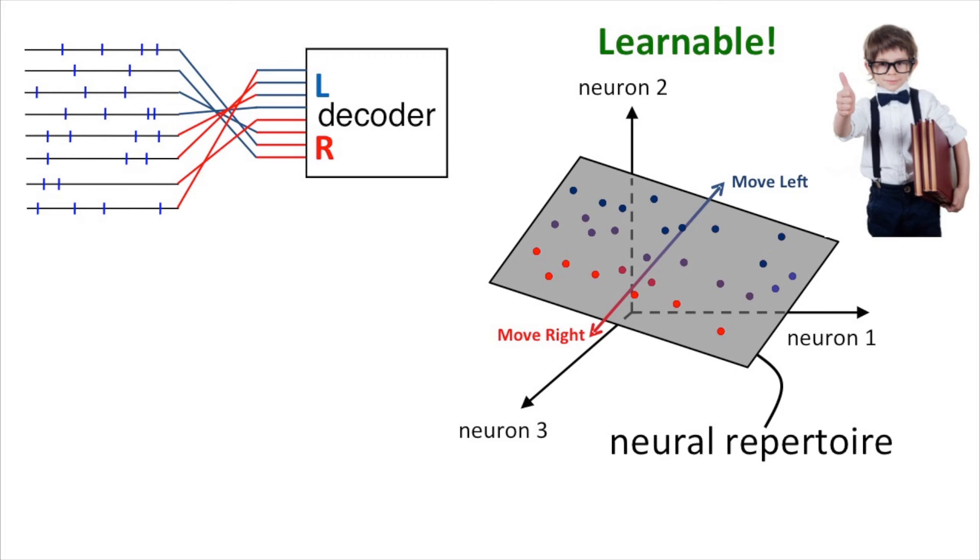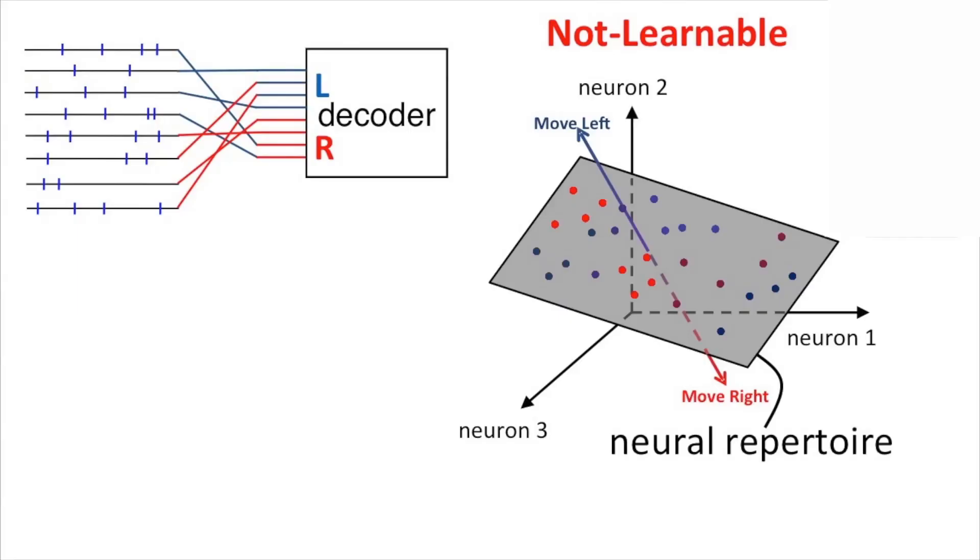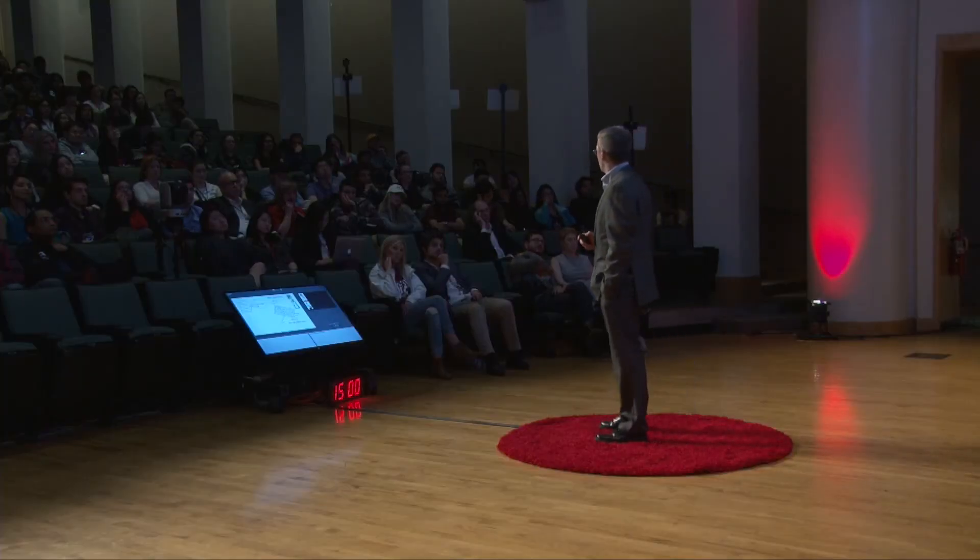Now, there are other mappings, other scramblings between neural activity and cursor movements that you can make. And so that first one, we would call it learnable. But we could give the subject another mapping to use, and that would spin this line randomly in space. And in this case, it might point outside of the set of patterns that you're able to produce, your neural repertoire. And it turns out you can attempt to reconfigure these patterns and spin them around. And it doesn't matter how you reconfigure those patterns. You can never drive movements through this device. In order to make movements through this device, you would have to generate fundamentally new activity patterns outside of your repertoire. And it turns out these kinds of movements are not learnable.